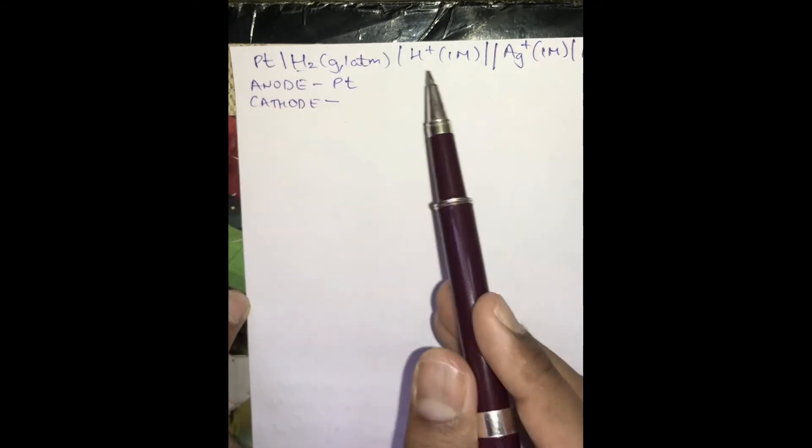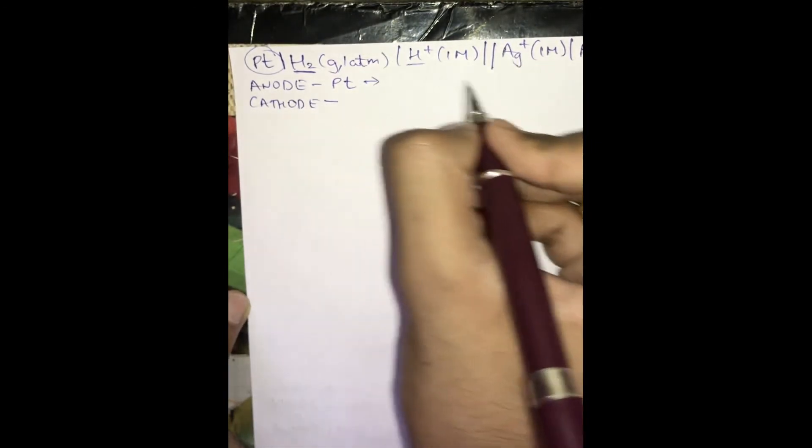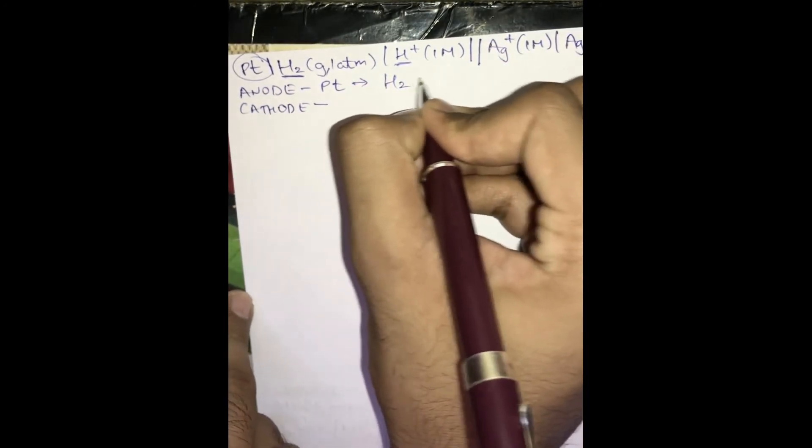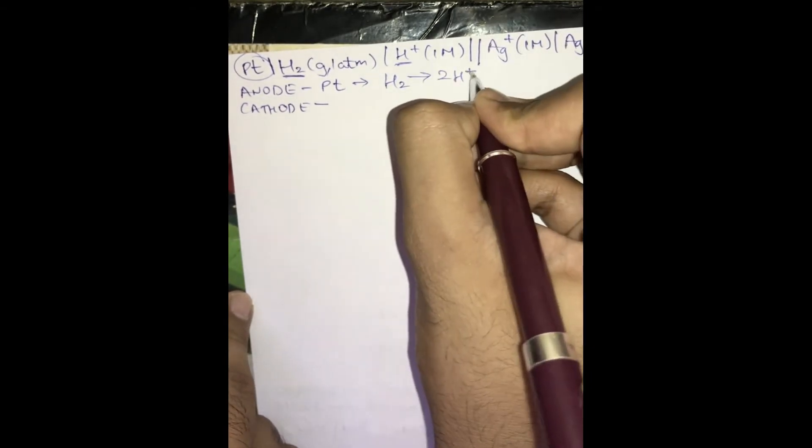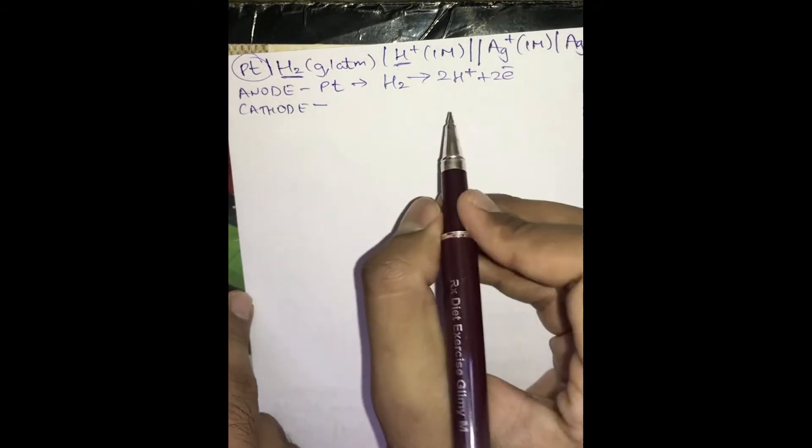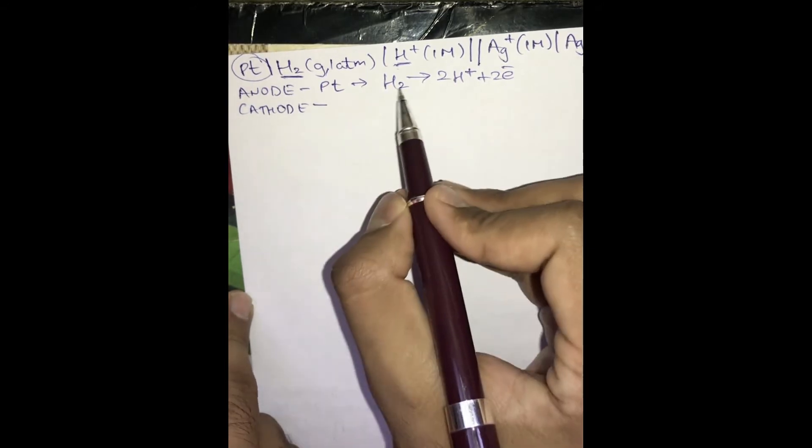At the anode, H⁺ ions are produced. Oxidation — that is loss of electrons — is taking place. Platinum cannot produce H⁺ ions, so these H⁺ ions are produced by the H₂ gas present in that half-cell. So H₂ gas will undergo oxidation. You have to see which ions are produced and write oxidation and reduction accordingly. H₂ will dissociate into 2H⁺ + 2e⁻, giving away two electrons because H₂ has two hydrogen atoms.